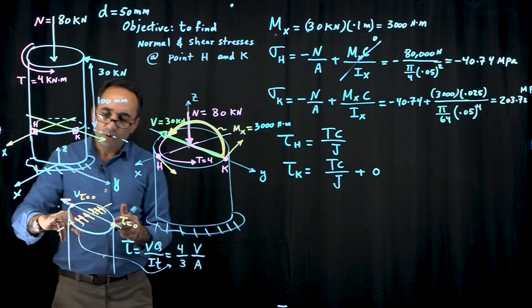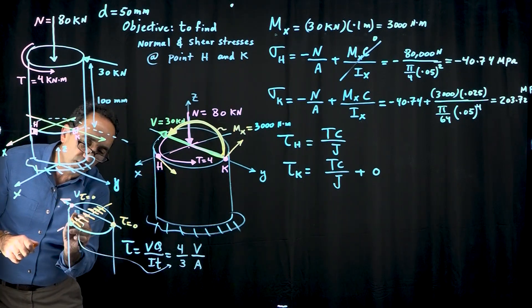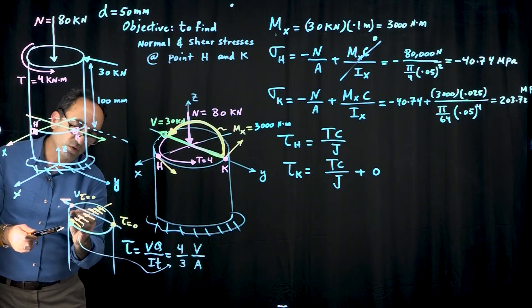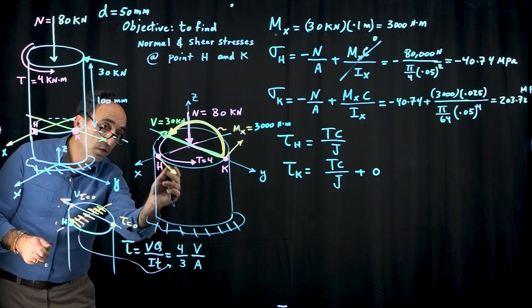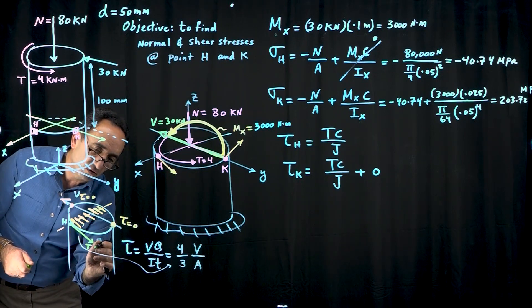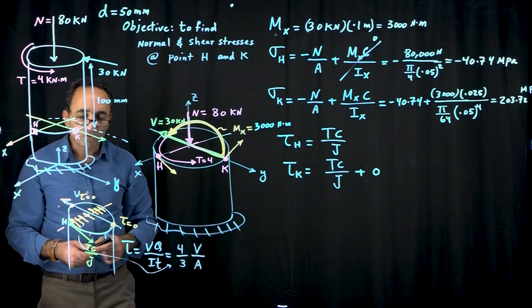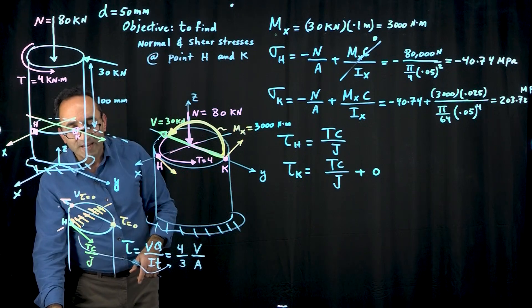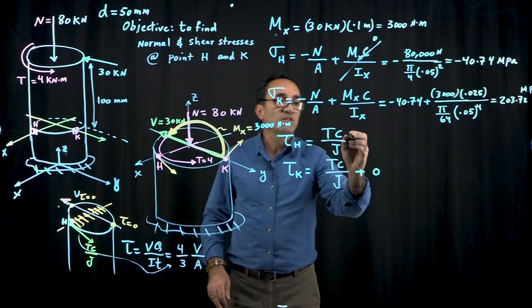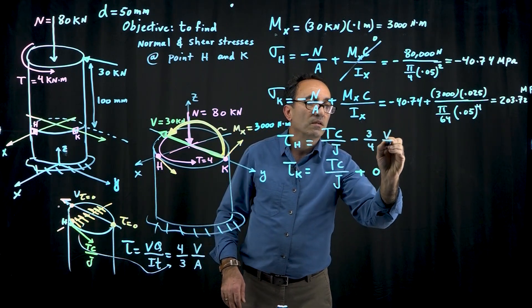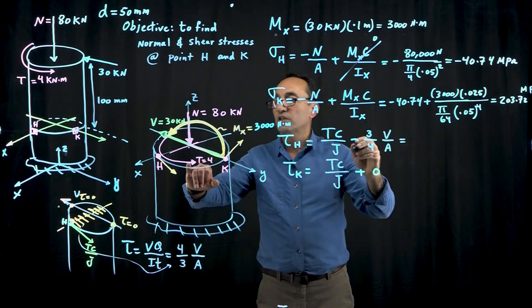The shear stress at point H is uniform everywhere. But you also have shear stress from TC over J. This is the TC over J term, and this is 4/3 V over A. The question is what do you do with that? Since TC over J is much larger and they're going in opposite directions, we subtract.